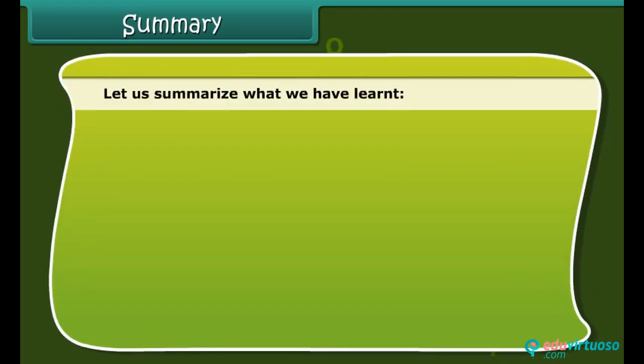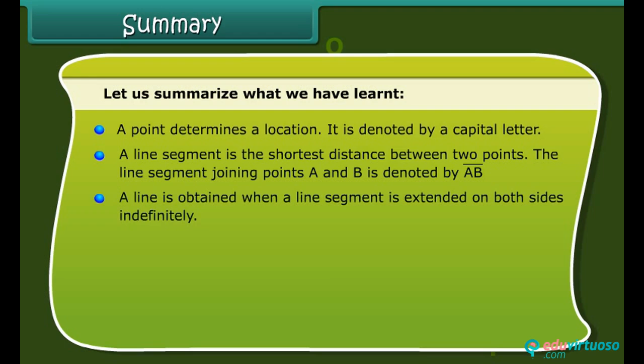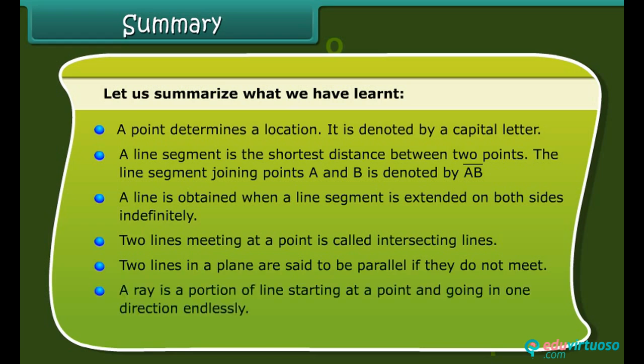Summary. Let us summarize what we have learnt: A point determines a location. It is denoted by a capital letter. A line segment is the shortest distance between two points. The line segment joining points A and B is denoted by AB. A line is obtained when a line segment is extended on both sides indefinitely. Two lines meeting at a point is called intersecting lines. Two lines in a plane are said to be parallel if they do not meet. A ray is a portion of a line starting at a point and going in one direction endlessly. Two rays starting from a common point form an angle.